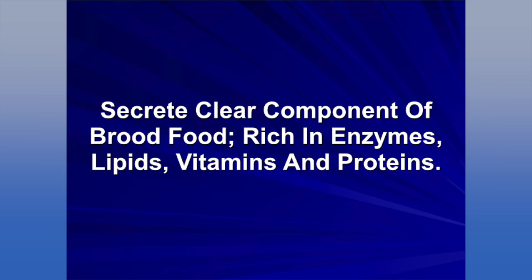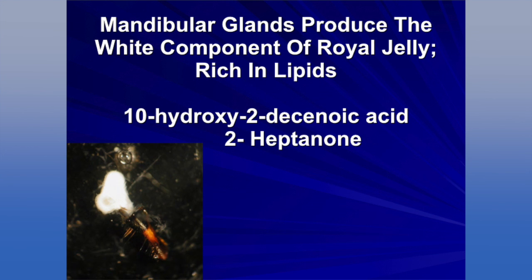The mandibular glands of the workers produce the white component of royal jelly, which is primarily made up of lipids. One of the key components is 10-hydroxy-2-decenoic acid. As young nurse bees, workers produce this component of the royal jelly, worker jelly, and drone jelly.